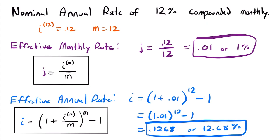The big takeaway here is that a nominal annual rate is just another way to give us an interest rate we already know how to use. We just have to take that nominal rate and convert it into the interest rate we want to work with. Let's finish with one more example.